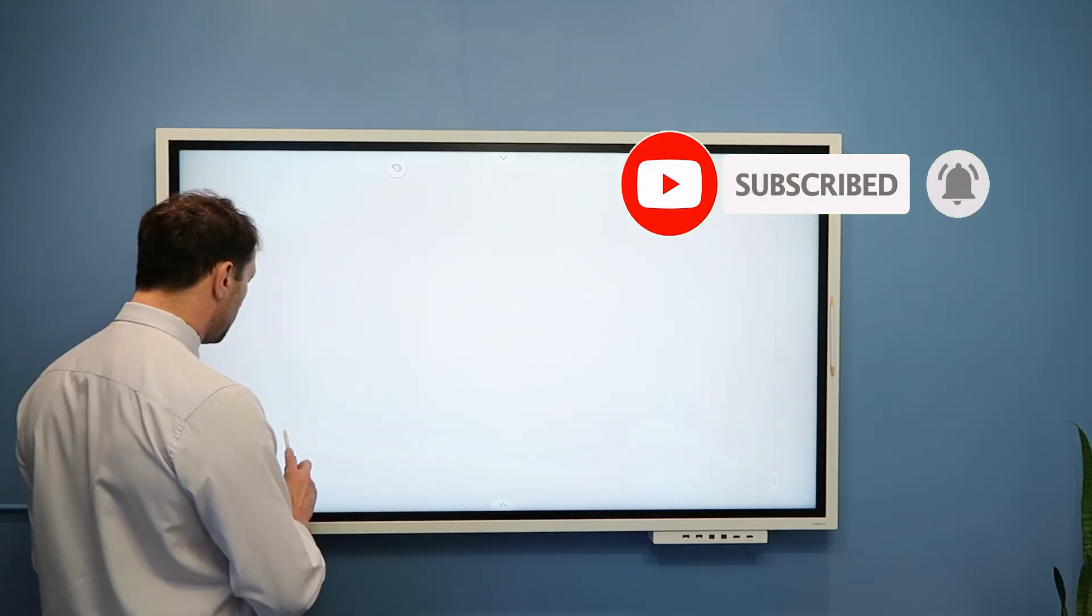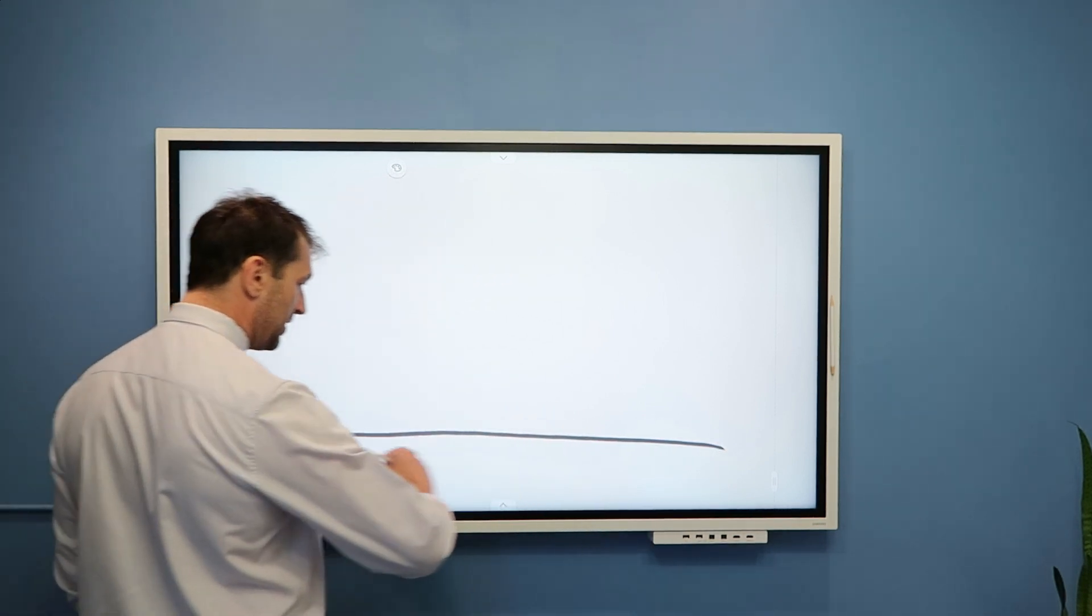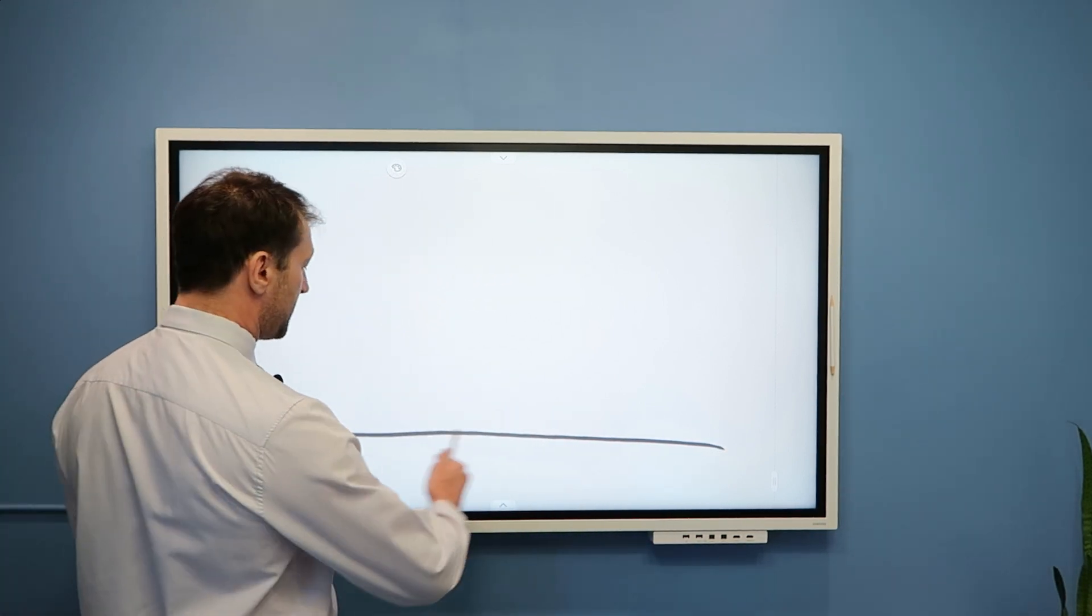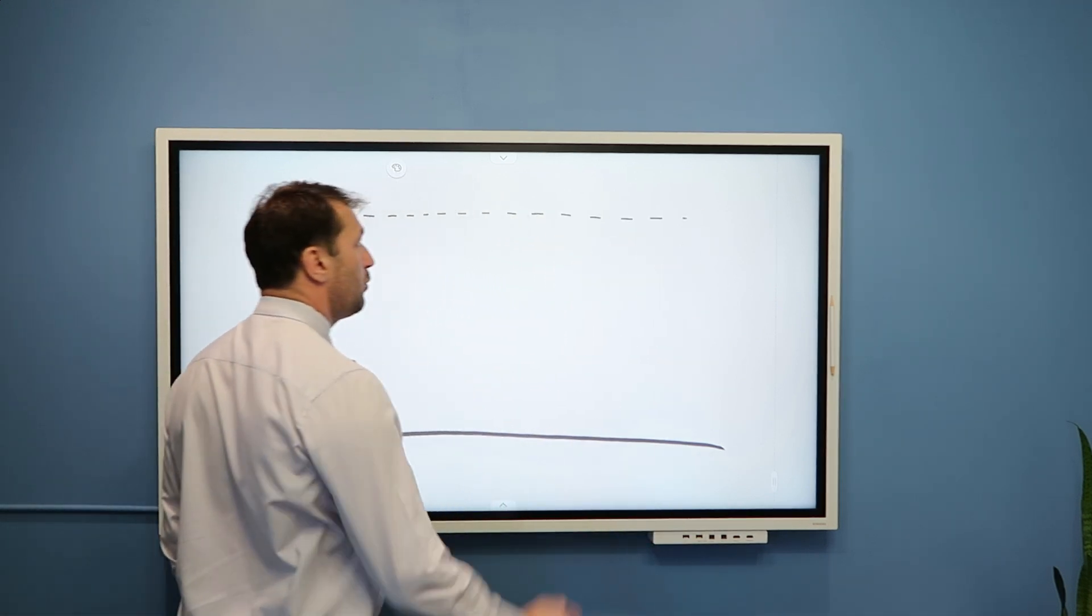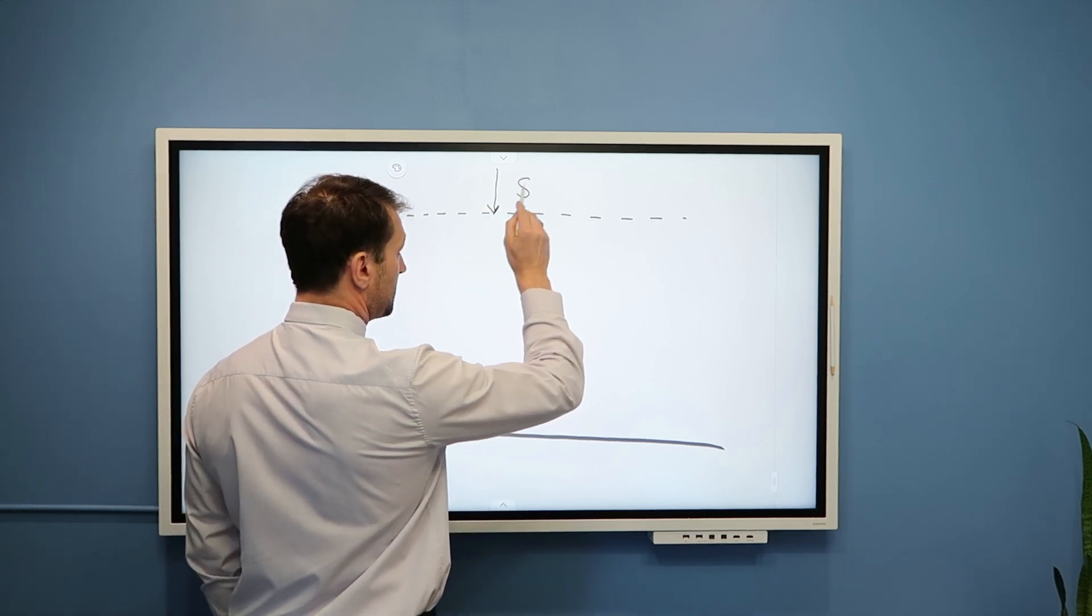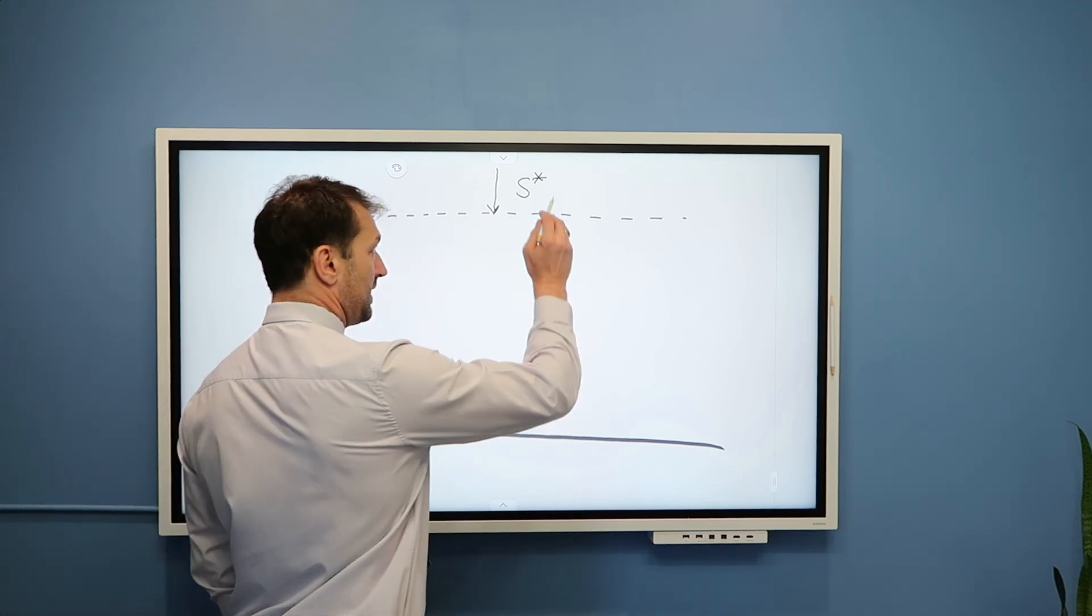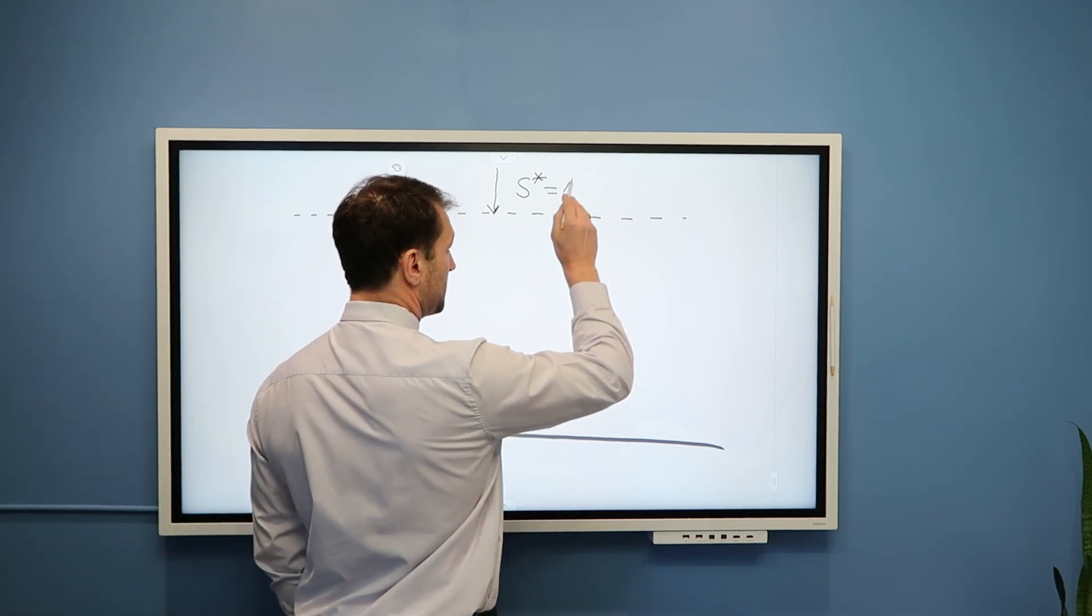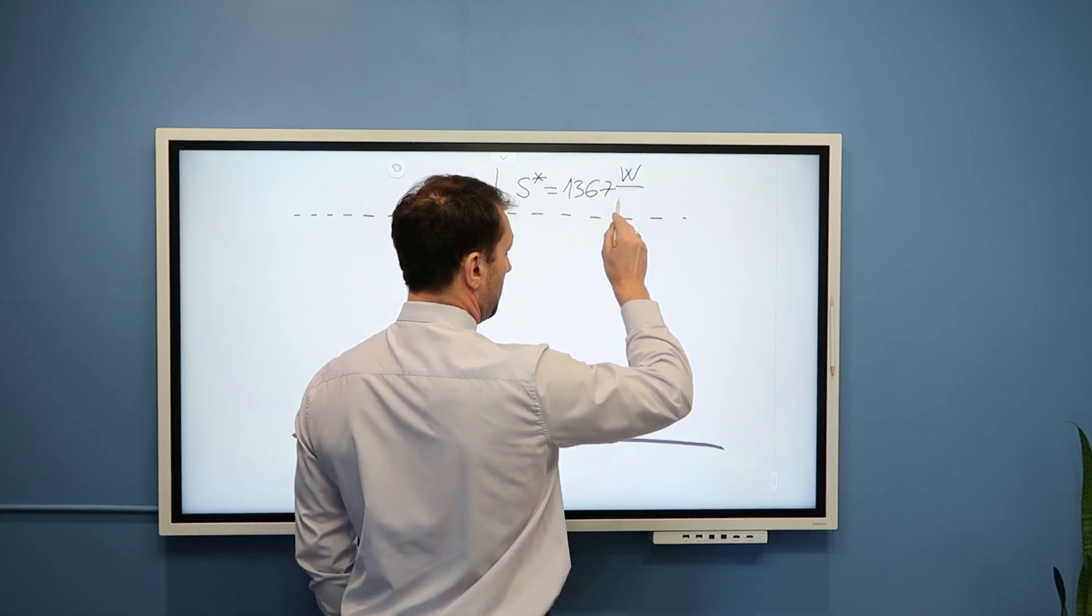To analyze budget of short wave or solar radiation, we will consider Earth's surface, which is an idealized surface that represents annual global average. And here we have the top of the atmosphere. We know that at the top of the atmosphere we receive the amount of radiation that is equal to solar constant, which we call S star, and this amount of radiation is equal to 1367 watts per square meter.